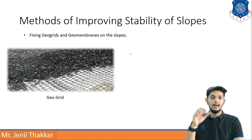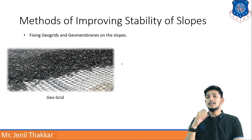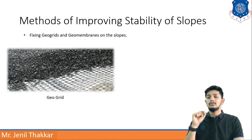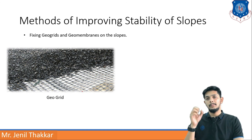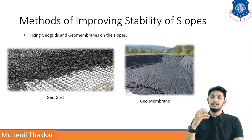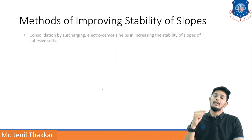Fixing geogrids and geomembranes on slopes is another method. Geogrids and geomembranes are two of the most emerging technologies in road construction. A geogrid is a net-like material; after adding geogrids, road layers become more stable. A geomembrane is a cloth of geomaterial that also helps improve slope stability.